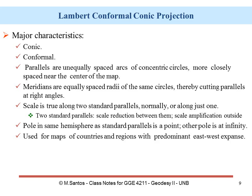The main characteristics of the Lambert conformal conic projection: it is conic and conformal. The parallels are unequally spaced arcs of concentric circles, more closely spaced near the center of the map. The meridians are equally spaced radii of the same circles, cutting parallels at right angles. Scale is true along two standard parallels, or along just one. There is scale reduction between the two parallels and scale amplification outside them. The pole is in the same hemisphere as the standard parallels; the other pole has no representation. It is used for maps of countries and regions with predominant east-west expanse.